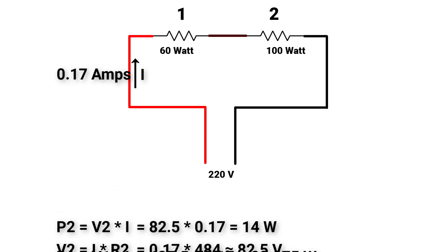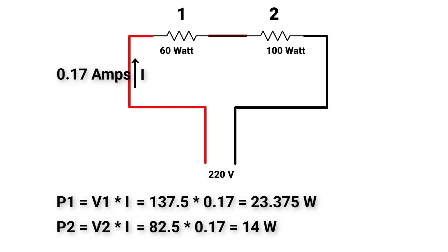So, the answer of our question is obvious now. Lamp number 1 will glow brighter because it has higher voltage across its ends, which cause higher power consumed for the same current. As you know, this electric energy will be converted into light energy.